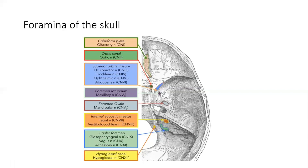The internal acoustic meatus carries the facial nerve and vestibulocochlear nerve. The jugular foramen carries the glossopharyngeal nerve, vagus nerve, and accessory nerve. The hypoglossal canal carries the hypoglossal nerve, cranial nerve number 12. These are the foramina of the skull and you need to remember the structures passing through each of them.